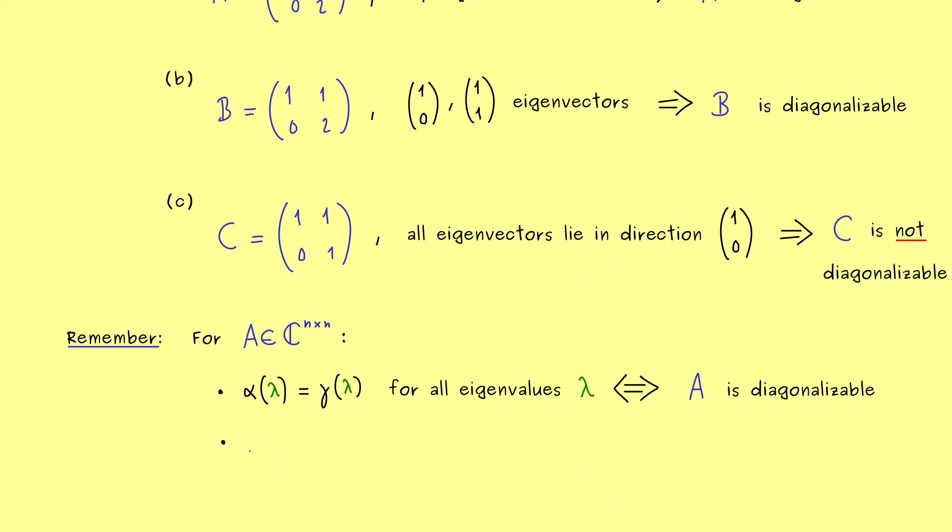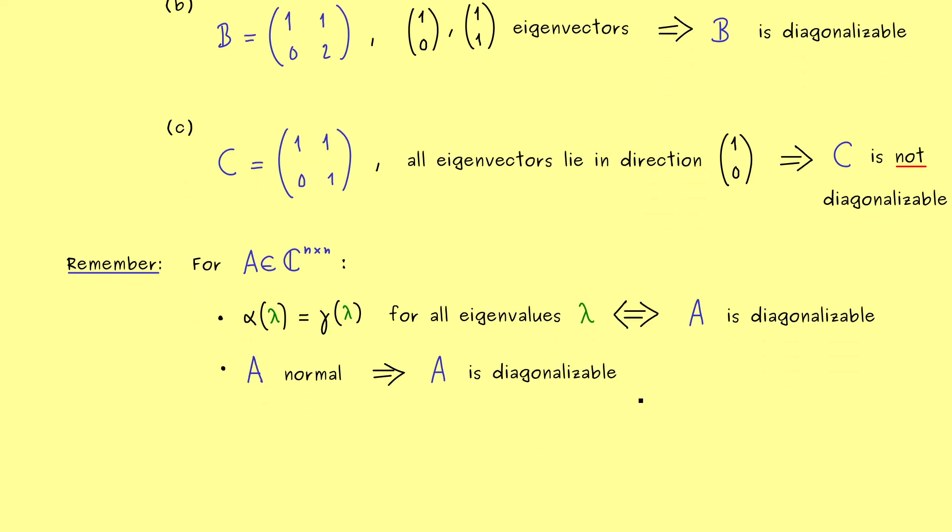Moreover, it also works the other way around. A diagonalizable matrix needs enough eigenvectors. And this means the geometric multiplicities have to be equal to the algebraic multiplicities. Indeed, this comes immediately out from our definition of A being diagonalizable and from the definition of the multiplicities. Now the second thing here I want to tell you is a little bit more complicated and harder to prove. However, it is a very important implication you never should forget. It tells us that every normal matrix, for example a self-adjoint matrix, is diagonalizable.